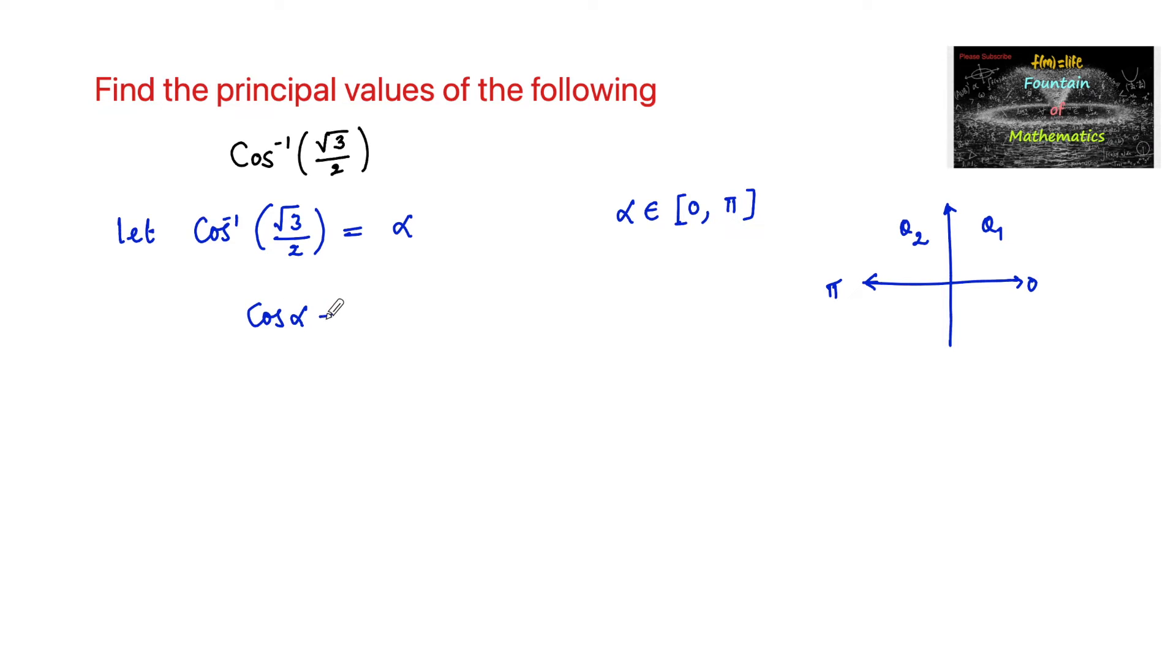So that cos alpha is equal to root 3 by 2, which is positive. Since we know that cos alpha is positive in the first quadrant and cos alpha is negative in the second quadrant.